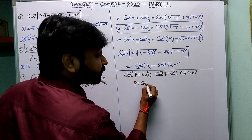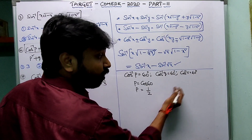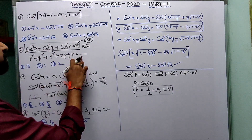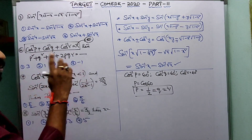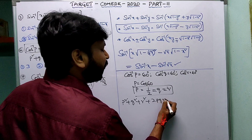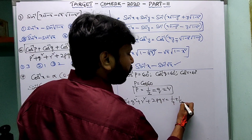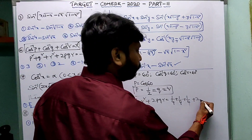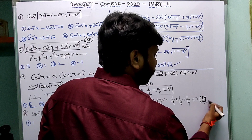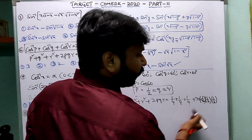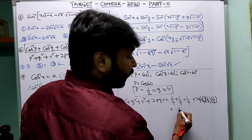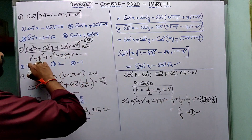Substituting p = q = r = 1/2: p²+q²+r²+2pqr = (1/4)+(1/4)+(1/4) + 2·(1/2)·(1/2)·(1/2) = 3/4 + 2·(1/8) = 3/4 + 1/4 = 1. So the answer is 1. Option 1 is the correct answer.